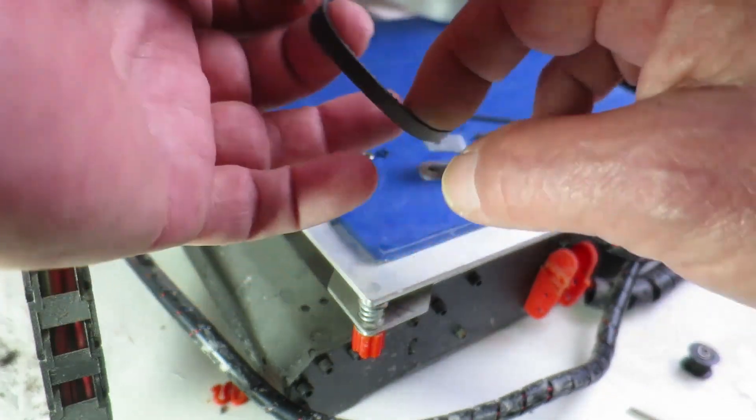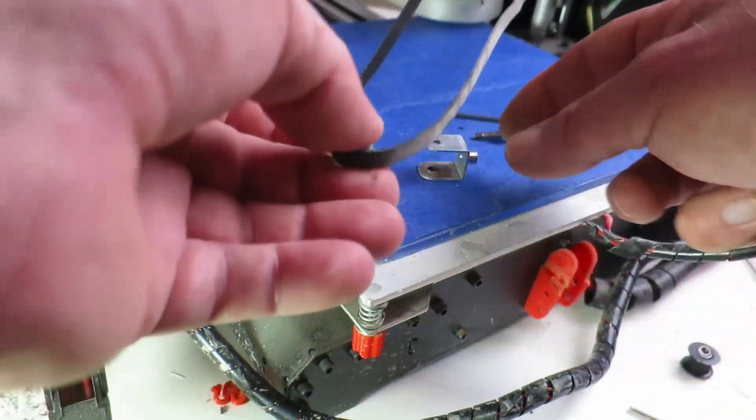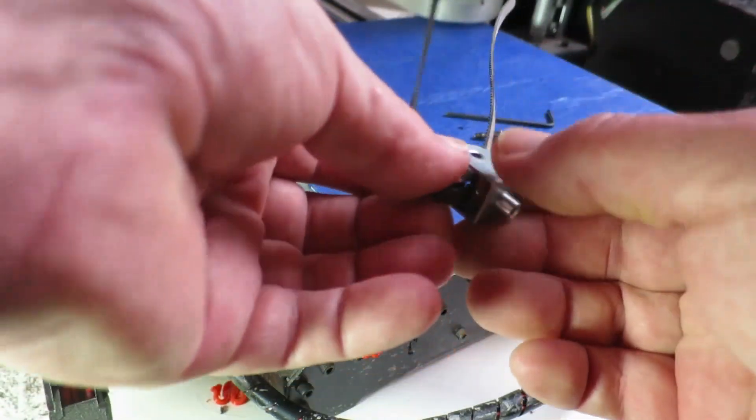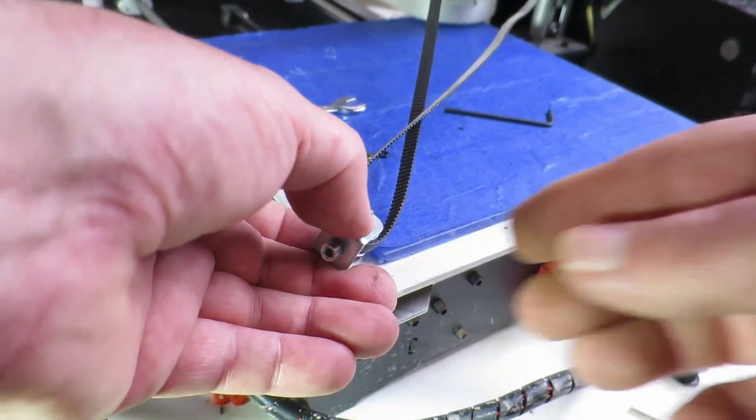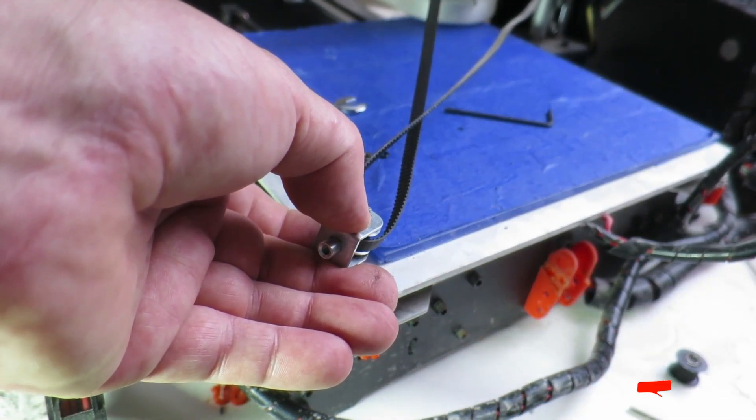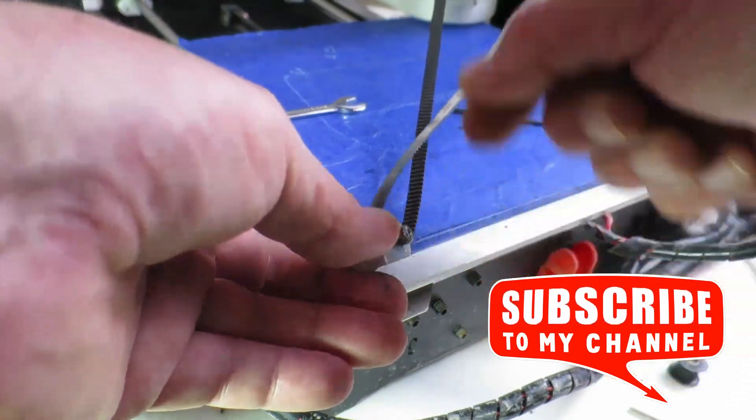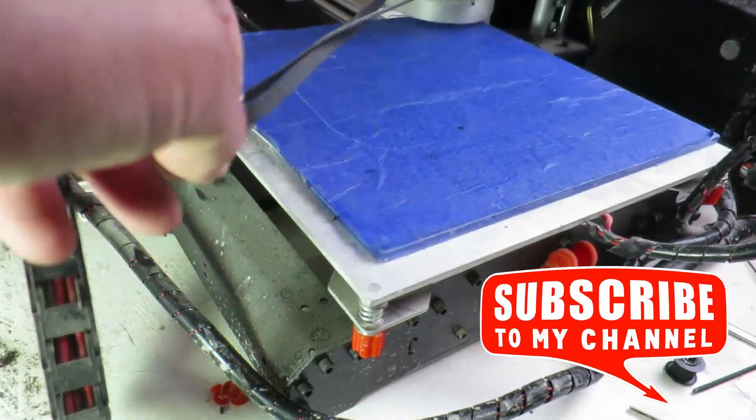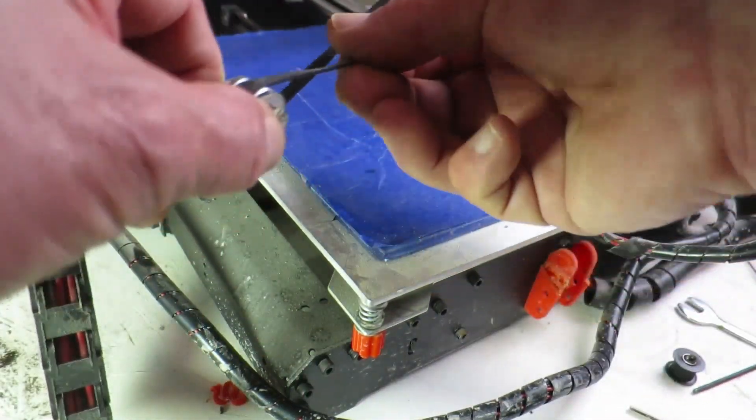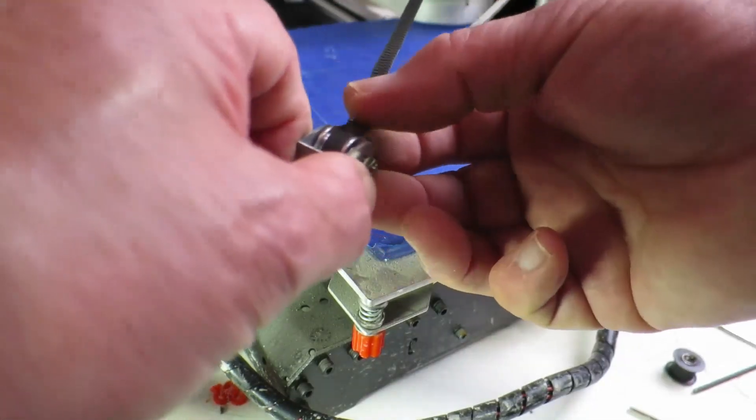So I guess the important thing is to make sure that we don't twist the belt around. To stop this coming undone, we're just going to put a little drop of thread locker on there. I'm not going to overtighten that, so that is running nice and freely now.